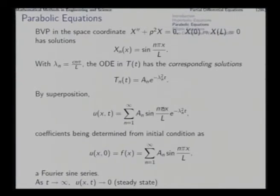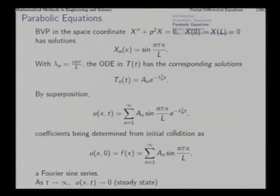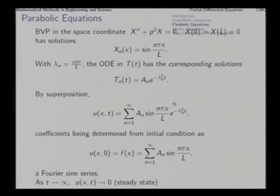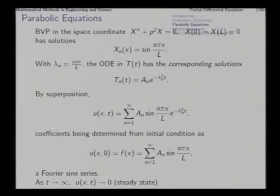The only remaining task is to find the coefficients a1, a2, a3, a4, and so on, which we determine by applying the initial condition. Applying the initial condition gives the Fourier sine series of the function f, which is the initial distribution of u over x. The time component is an exponentially decaying term, so as T tends to infinity, the solution tends to zero — meaning the steady state is u equal to zero throughout.